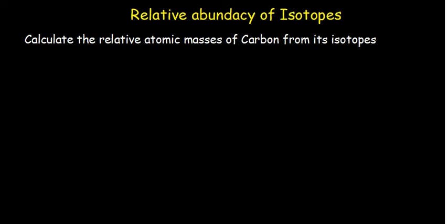Let's talk about the relative abundance of isotopes. Isotopes are atoms of the same element with different mass numbers. An example is carbon-12,